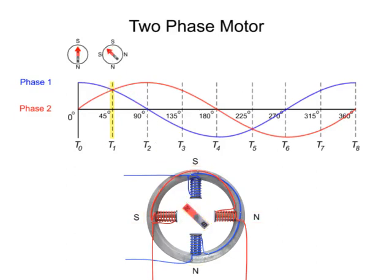At time 2, phase 1 reaches zero current flow, while phase 2 reaches maximum current flow. This causes the rotor to turn 45 degrees counterclockwise to align itself with the horizontal poles.